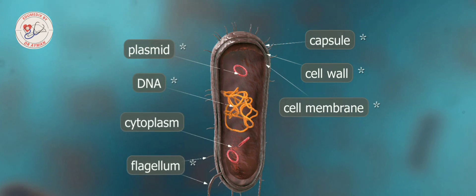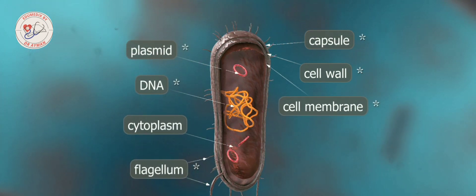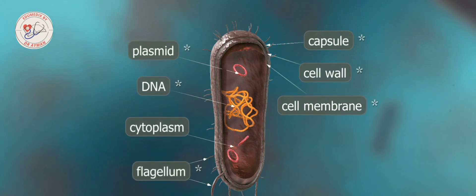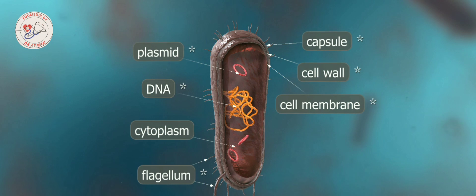Outside the cell wall is the capsule, which is made mainly from polysaccharides. It protects the cell and is responsible for the disease caused by some bacteria in the host organism.